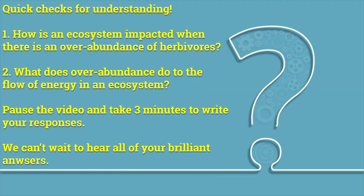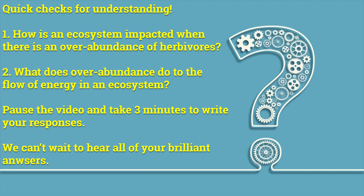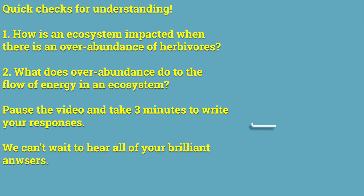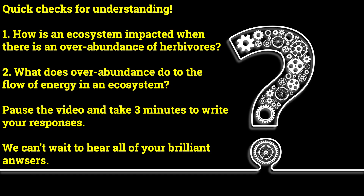Quick checks for understanding. Number one: how is an ecosystem impacted when there is an overabundance of herbivores? Number two: what does overabundance do to the flow of energy in an ecosystem? Pause the video and take three minutes to write your responses. We can't wait to hear all of your brilliant answers.